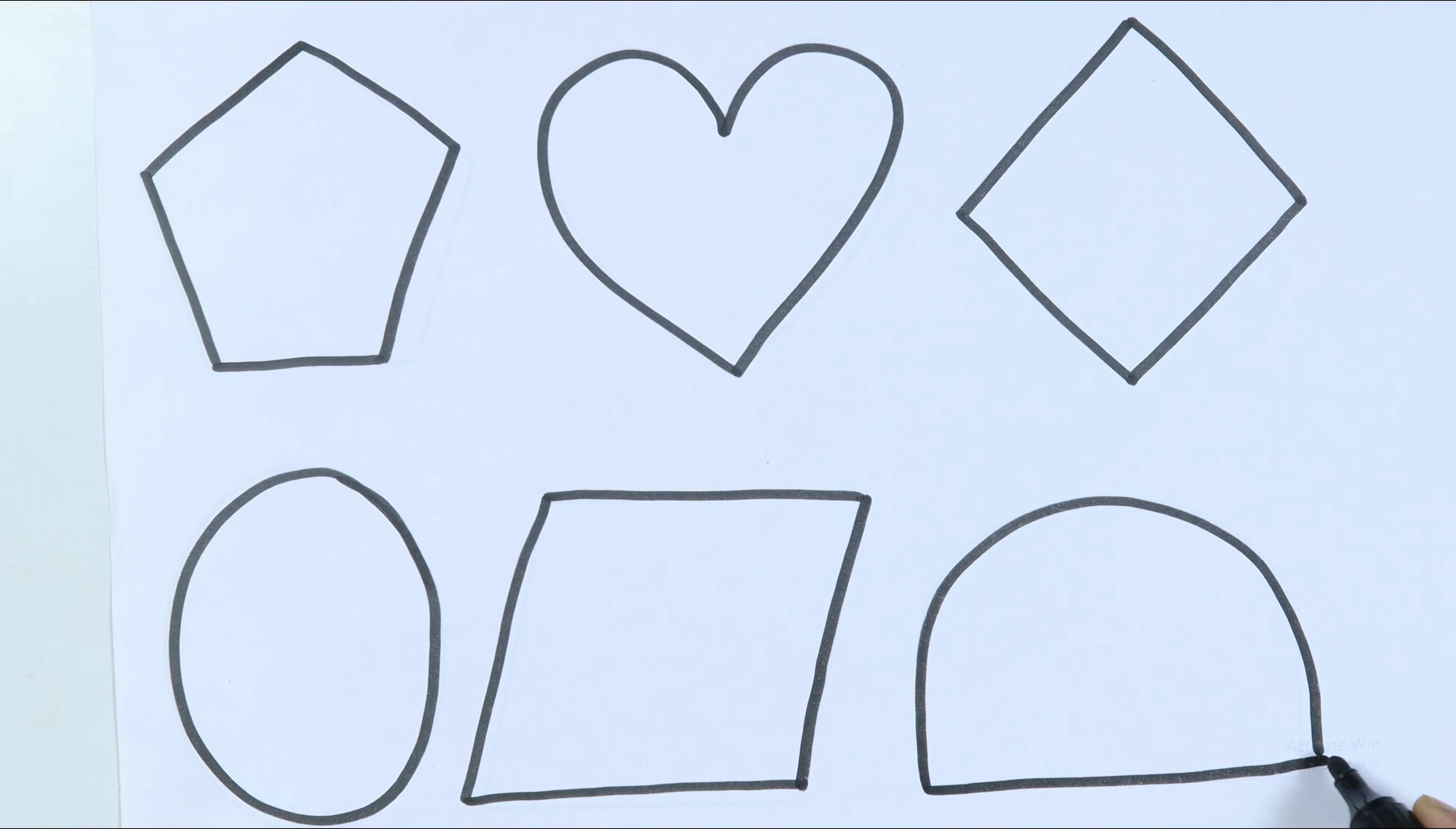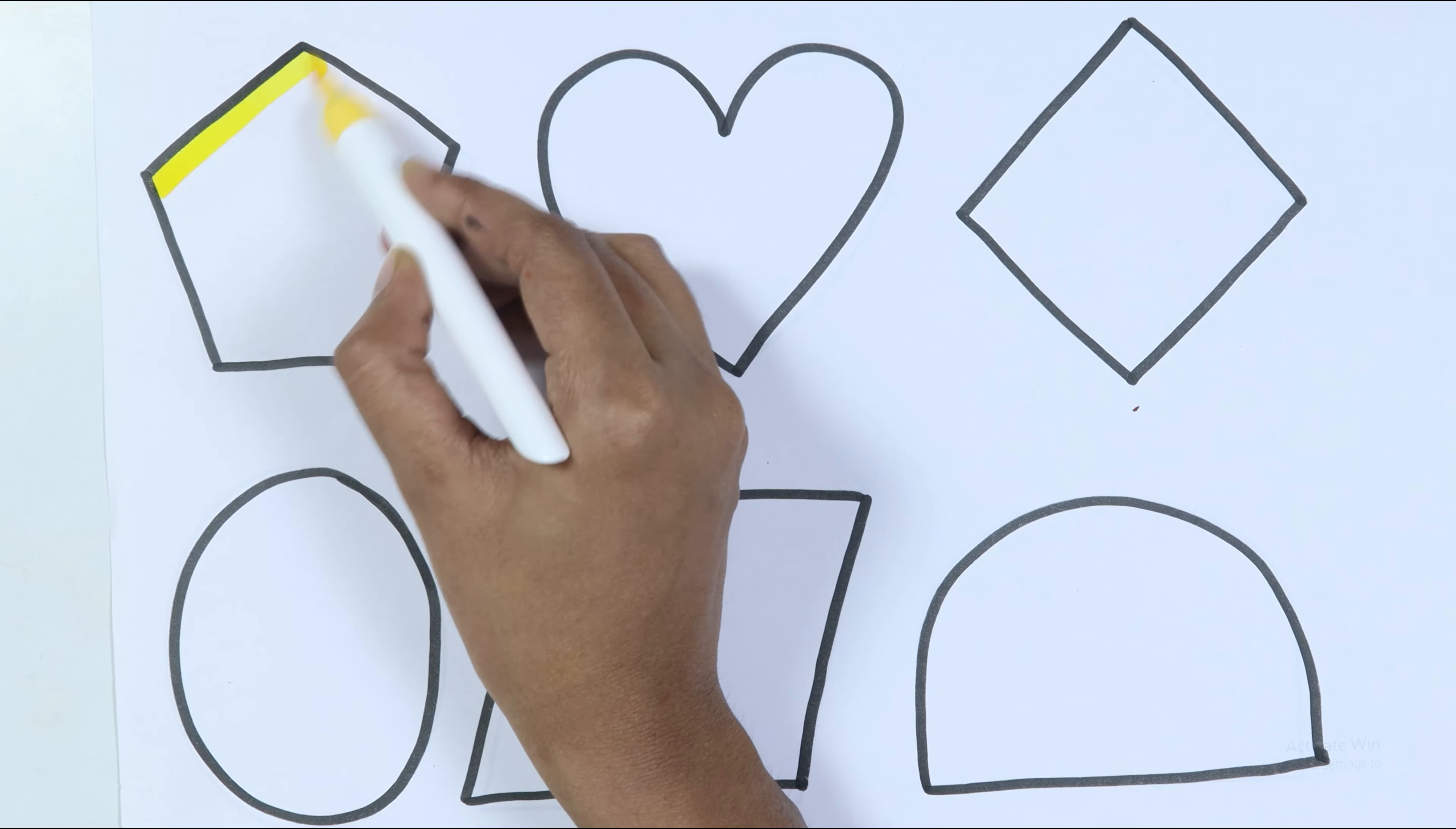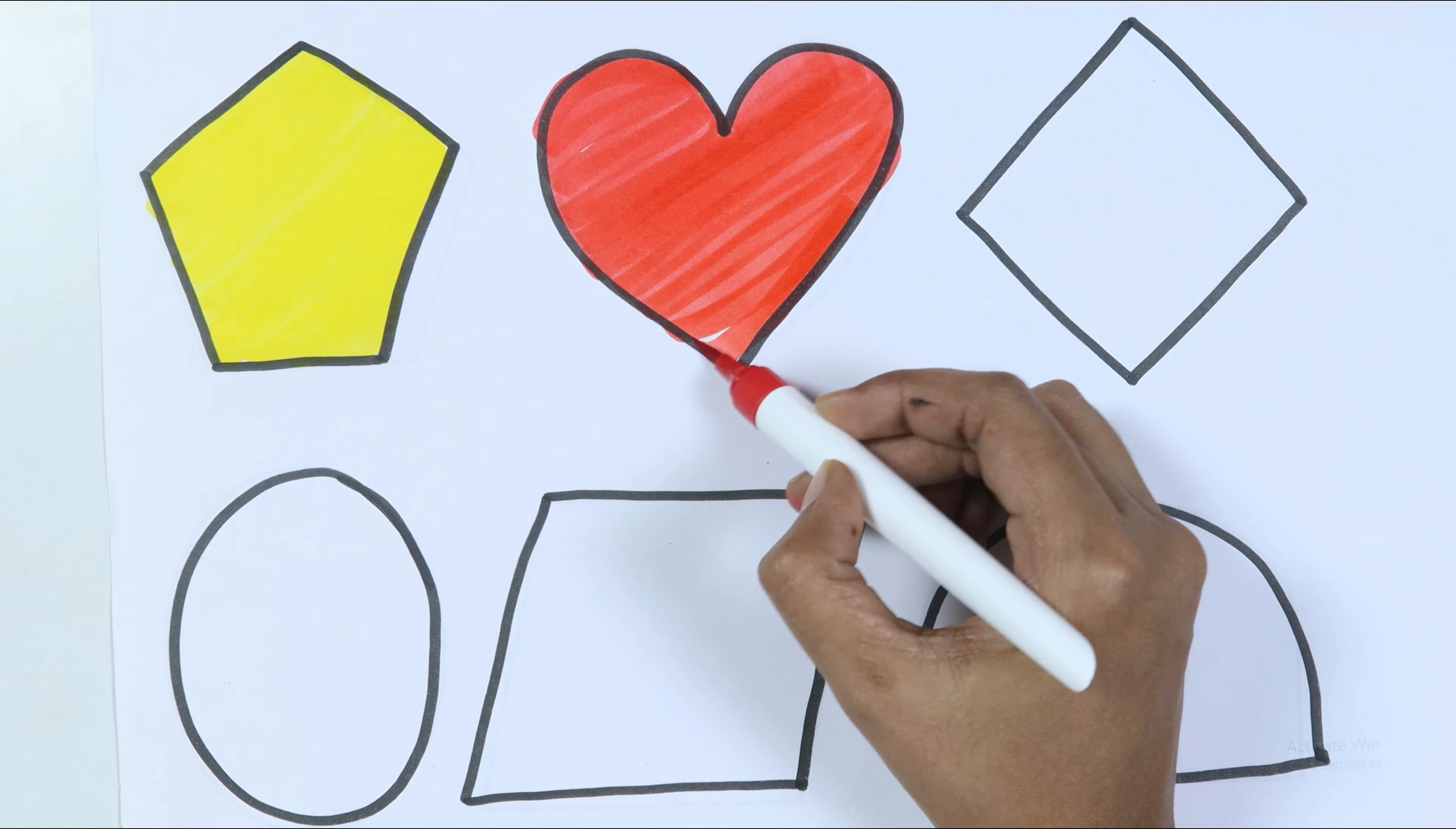So this is the black color. Which color kids? Black color. Pentagon. Heart. Rhombus. Ellipse. Parallelogram. Semi circle.